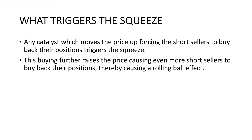This process continues until the short selling is exhausted — which brings in the concept of short ratio. The second trigger is again a catalyst that raises the price, but now it's not just stop losses forcing share buybacks. The brokers, who have lent their shares, don't want to take losses. So what brokers will first do is send out margin calls — asking for more and more money because if somebody's gone short and the price starts going up, they are accumulating losses.